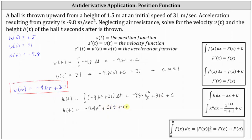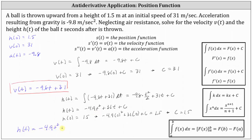We also know h of zero is equal to 1.5, which will allow us to determine C. If h of zero is equal to 1.5, substituting zero for t, the function value must be 1.5, which gives us negative 4.9 times zero squared plus 31 times zero plus C equals 1.5. Simplifying, we have C equals 1.5, giving us our height function: h of t is equal to negative 4.9 t squared plus 31 t plus 1.5.